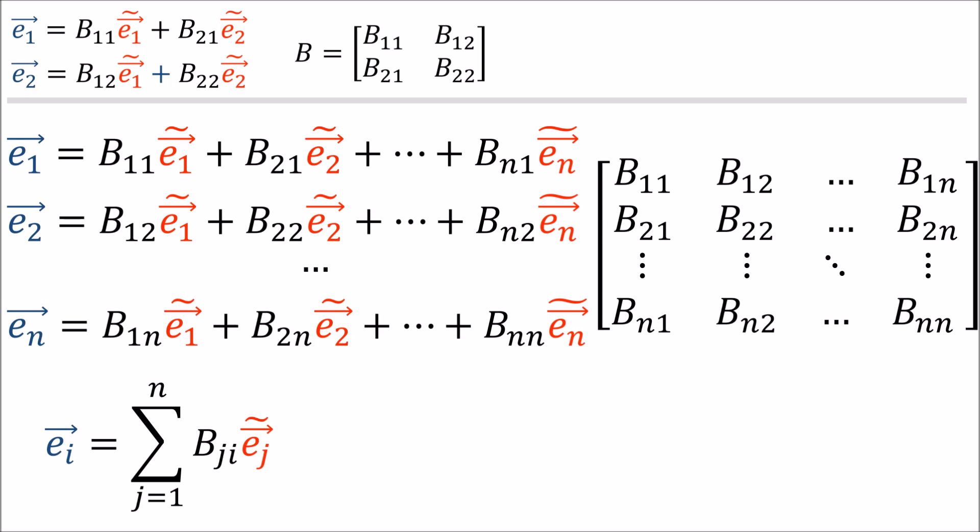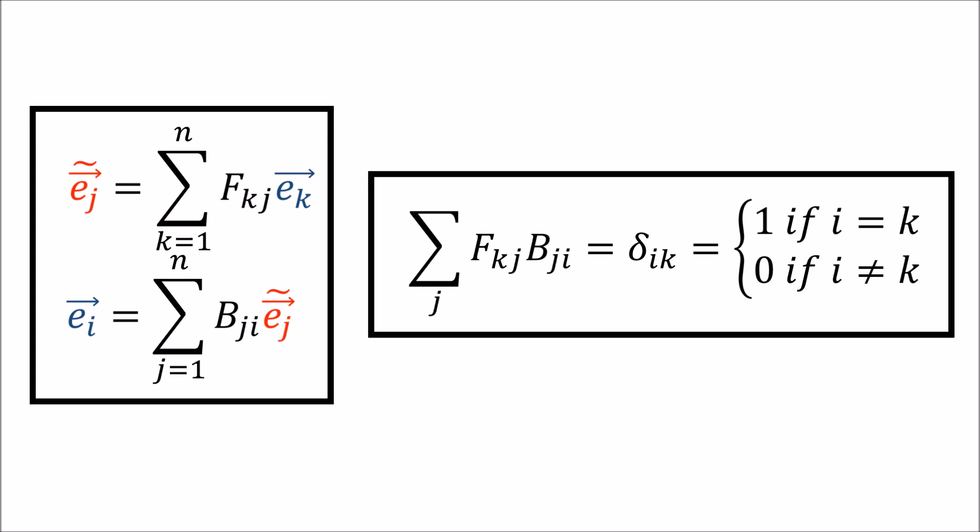The same goes for the backward transform. B_{j,i} tells us how much of ẽ_j ends up in e_i. So these are the correct forward and backward transforms here.